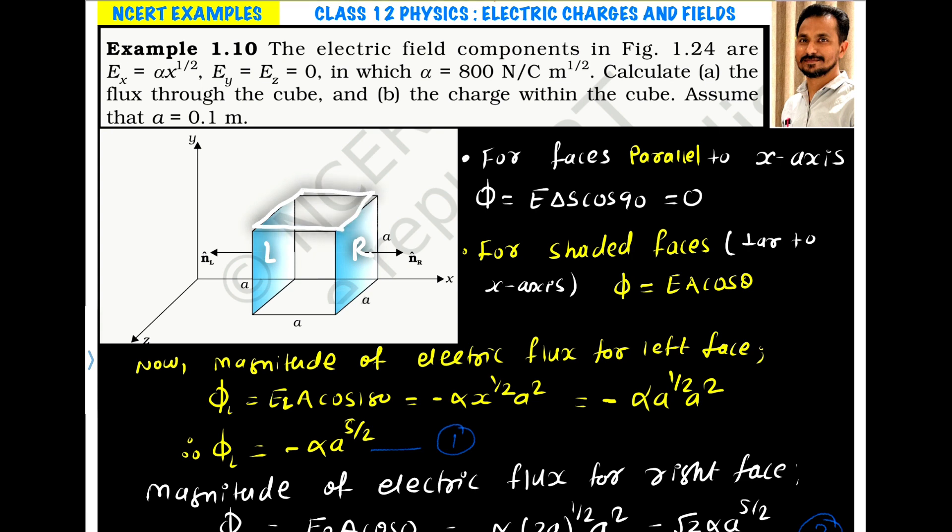If we talk about this upper face, the area vector is in this direction and the electric field is along x direction. The angle is 90 degrees. We know that flux equals EA cos θ. For this face, θ is 90, so cos 90 is 0. For faces parallel to x axis, the flux is 0.